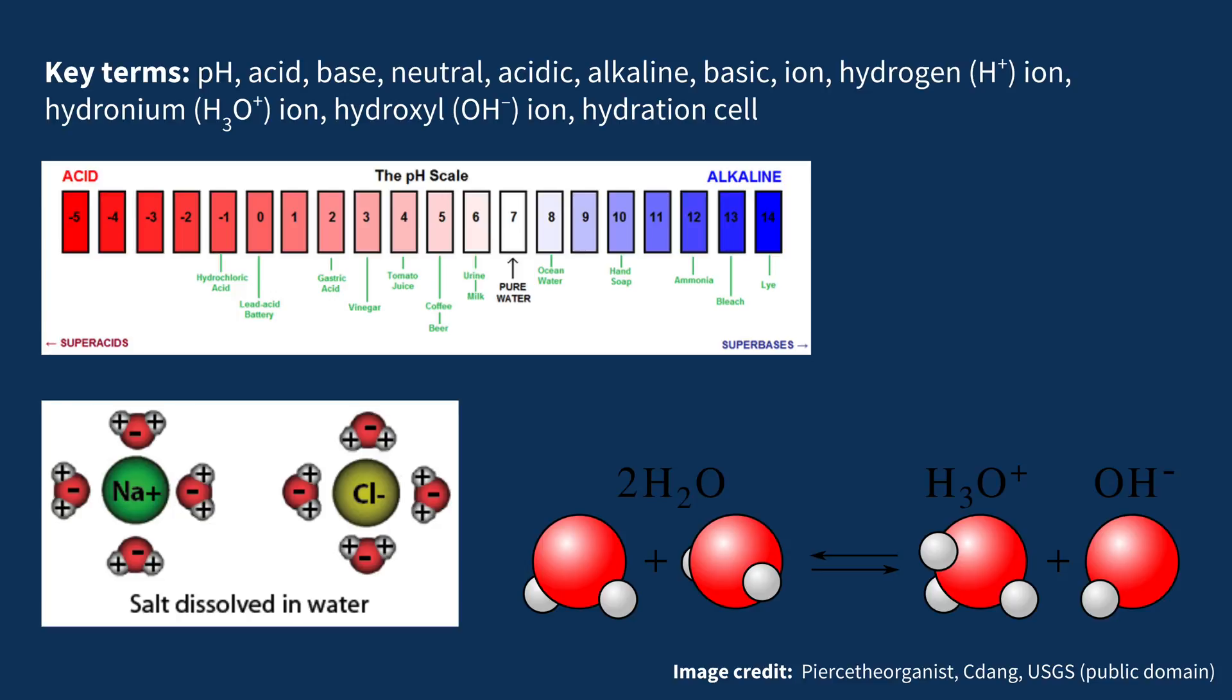Pure water has a pH of 7.0 and is considered neutral. Something that is acidic has a lower pH, whereas something that is basic or alkaline has a higher pH. The pH scale is logarithmic, meaning that an increase or decrease of 1 pH unit is equal to making something 10 times more alkaline or 10 times more acidic, respectively.